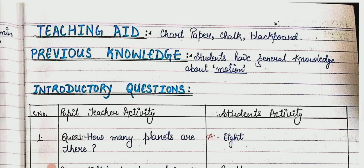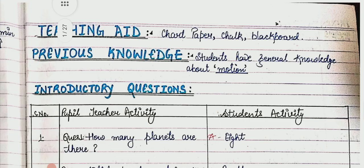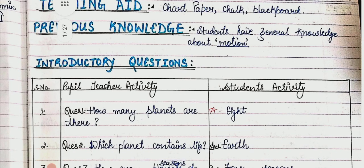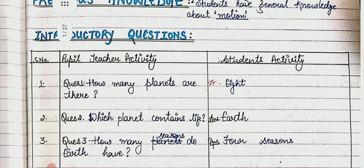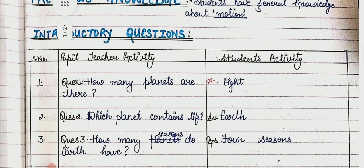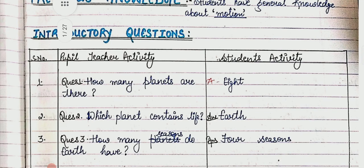Next is previous knowledge — students have general knowledge about motion. After previous knowledge, we note introductory questions. We have five introductory questions in our topic on motion.